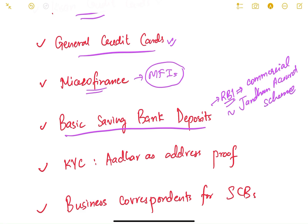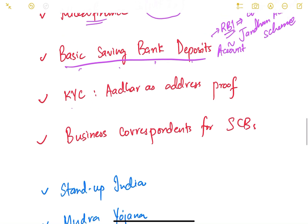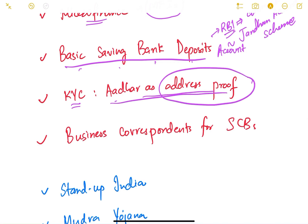Microfinancing Institutions (MFIs) were opened to give microfinance loans to poor people. The Basic Savings Bank Deposit scheme was an RBI scheme asking commercial banks to implement zero-balance accounts, similar to the Jan Dhan account scheme. For KYC norms, Aadhaar was allowed to be used as address proof, since many poor people in villages do not have a passport or PAN card.